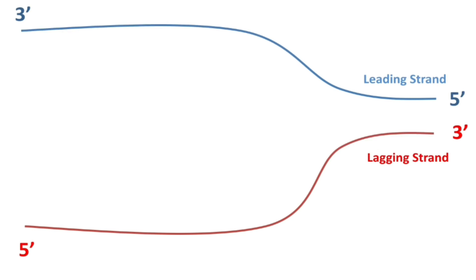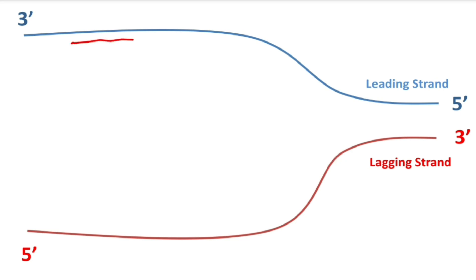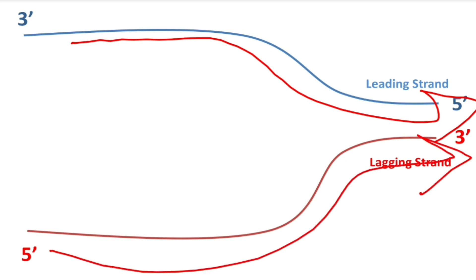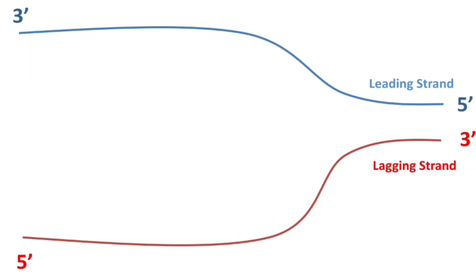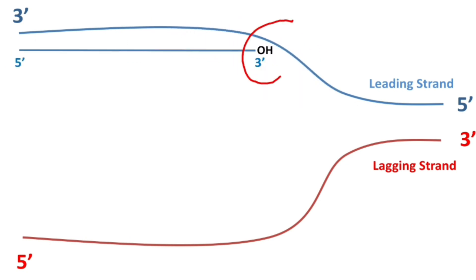DNA replication happens once the cell divides, because when a cell divides into two cells, both cells must have a copy of DNA. DNA is a double strand and antiparallel — if one strand goes from 3' to 5', the other goes from 5' to 3'. The strand going from 3' to 5' is called the leading strand; the strand going from 5' to 3' is called the lagging strand. DNA replication starts when DNA polymerase comes — an enzyme that synthesizes a new strand in the direction of 5' to 3'. DNA polymerase acts on the leading strand to form the new strand from 5' to 3', using the free OH to add nucleotides one by one.